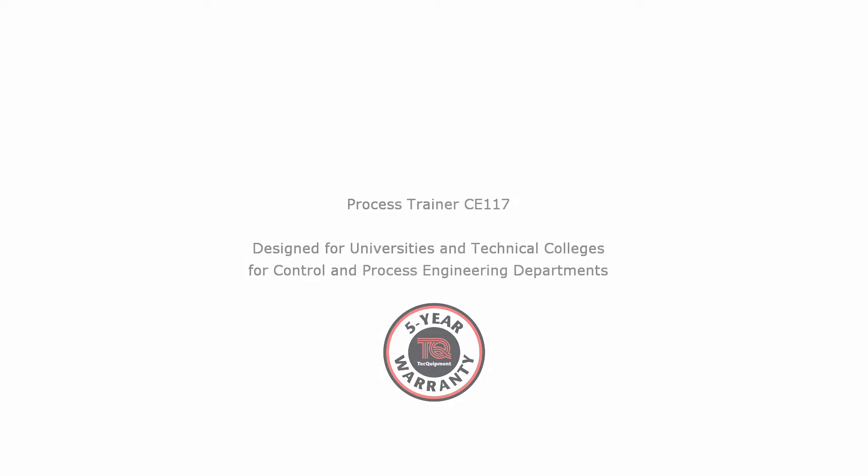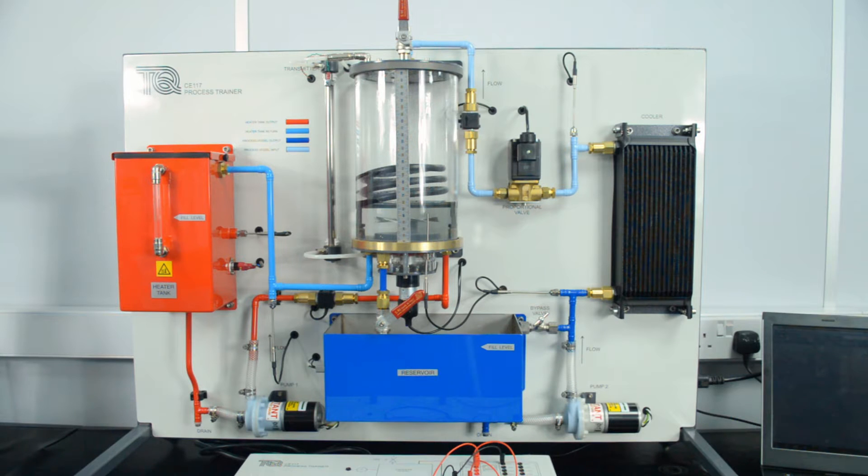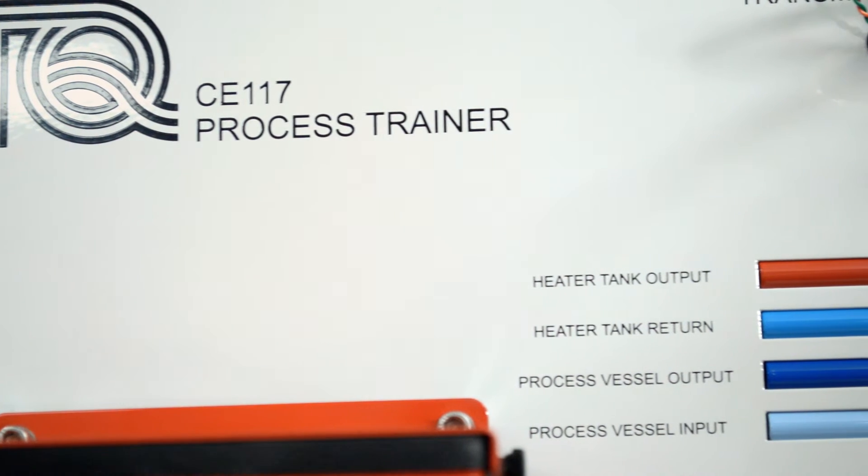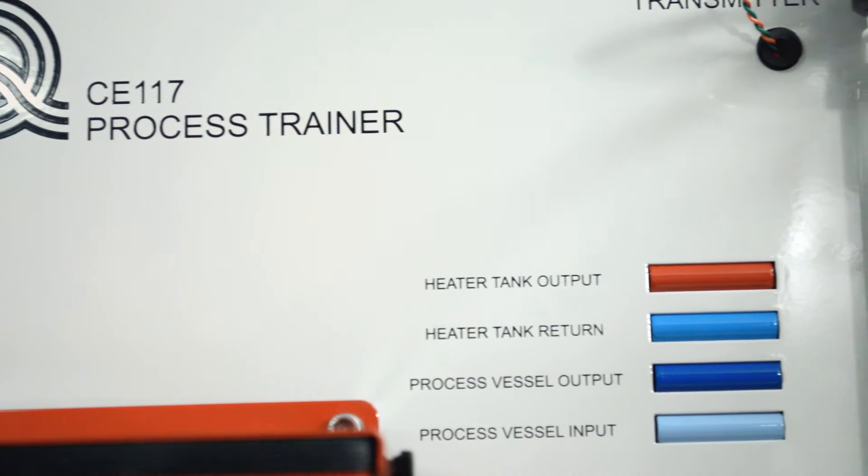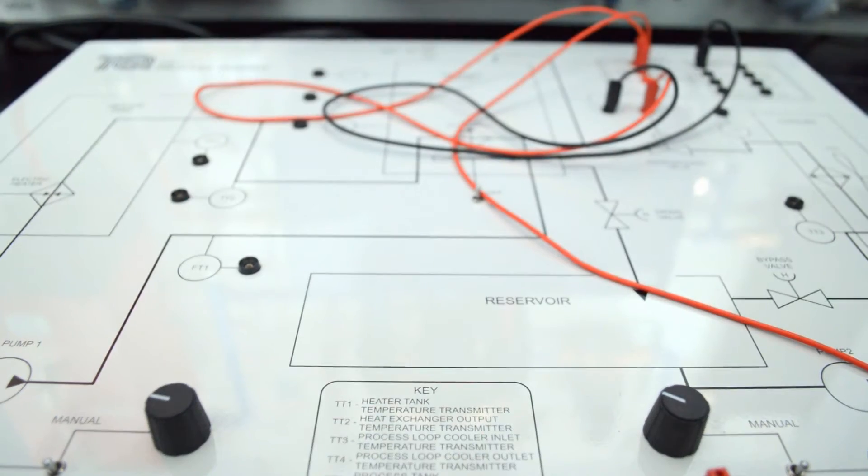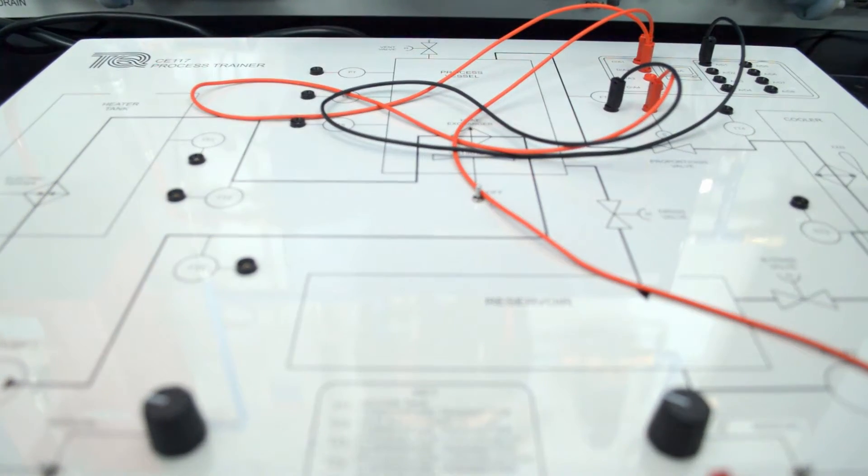Tech Equipment's Process Trainer is an educational package that mimics industrial process engineering. The equipment consists of an experiment module, a control module and Tech Equipment's CE-2000 software.